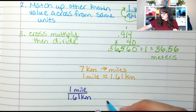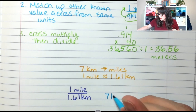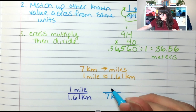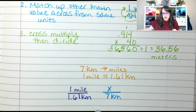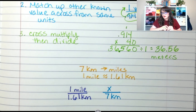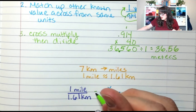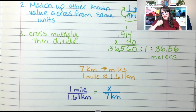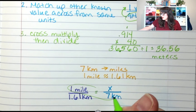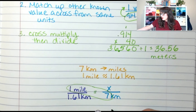Is kilometers on top or on bottom? Kilometers is on bottom, so I want to put seven kilometers next to kilometers and I'm going to put X on top for my unknown miles. Now that I have my proportion set up, what do I do? I'm going to cross multiply. What two numbers do I cross multiply? One times seven, which is seven.